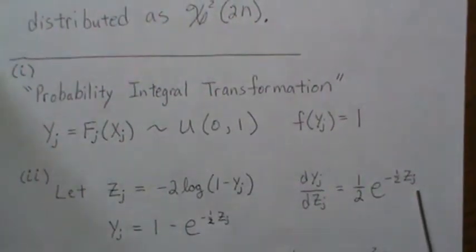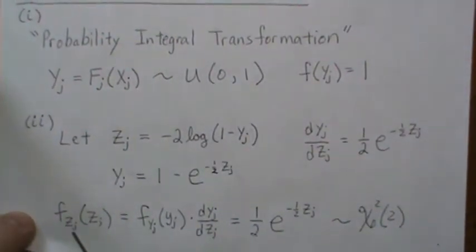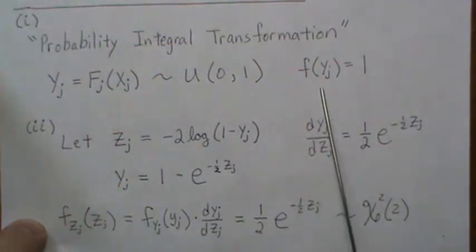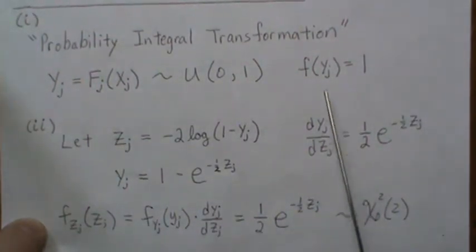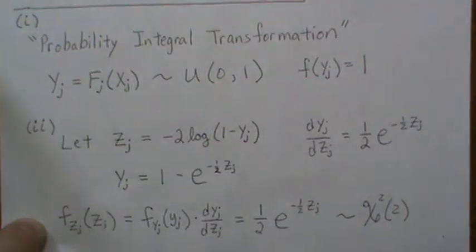So the distribution of Zj, f(Zj), is equal to f(Yj) and we plug in this piece to the distribution of Y which is just 1, so this goes away, and then we take it times the absolute value of the Jacobian or the derivative which is this. And since this is always positive we didn't need the absolute values but it probably should be there.